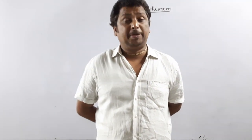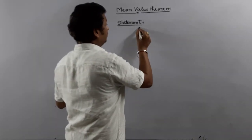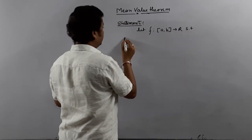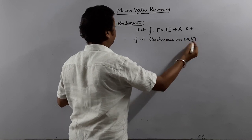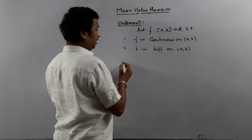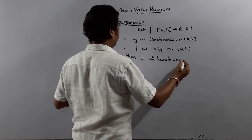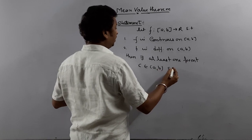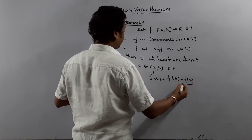Hello friends, today I'm going to explain the Mean Value Theorem, also known as Lagrange's Mean Value Theorem. The statement is: let f be a function from the closed interval [a, b] to ℝ such that f is continuous on [a, b] and f is differentiable on the open interval (a, b). Then there exists at least one point c in the open interval (a, b) such that f'(c) = (f(b) - f(a)) / (b - a).